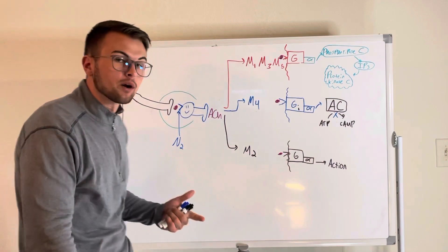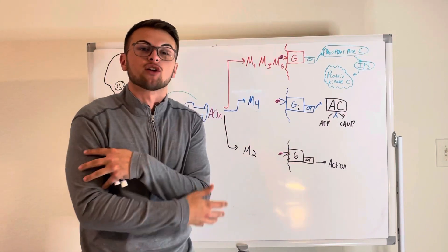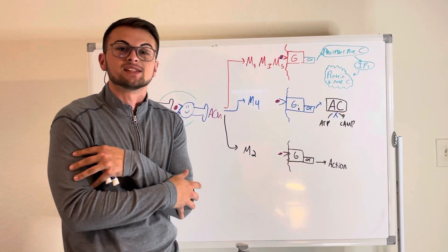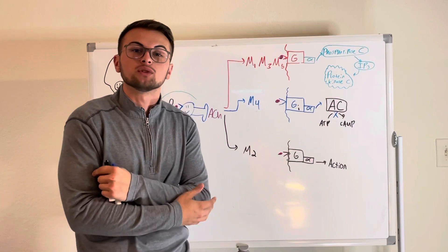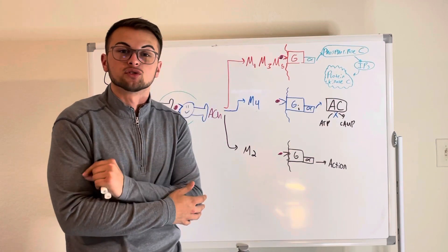So N1 receptors are actually located at our neuromuscular junction. These nicotinic 1 receptors, they're still activated by acetylcholine but they're only found in our skeletal muscles.